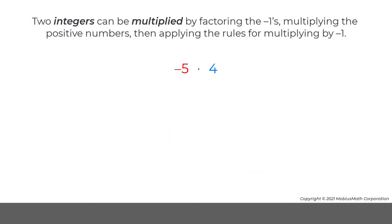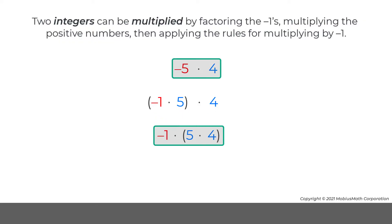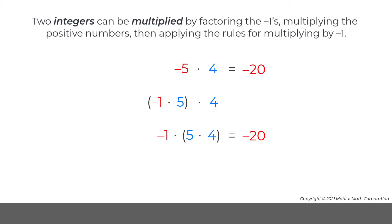For a second example, only one of the numbers is negative: negative 5 times 4. When negative 5 is factored to get negative 1 times 5, negative 5 times 4 is the same as the opposite of 5 times 4, or negative 20.